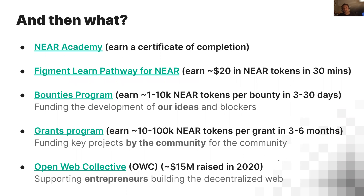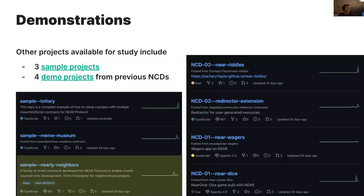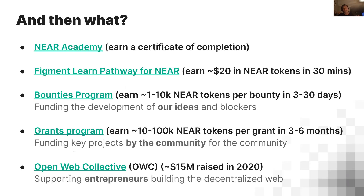People always ask: what can I do after this? You can check out near.academy — it's a URL with a simple eight-chapter walkthrough through the Meme Museum project. Figment Learn pathway pays you about 20 dollars to spend 30 to 60 minutes learning about NEAR code. The bounties program lets you earn more money solving our problems. The grants program lets you earn money solving your own problems. And the Open Web Collective lets you join startups that are building businesses. That's what you could do next.